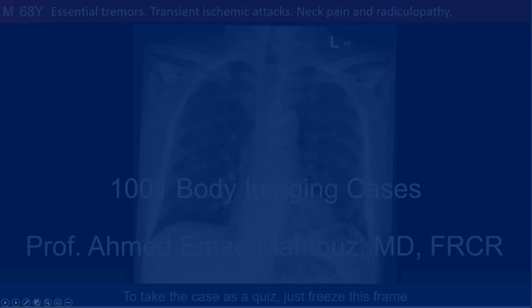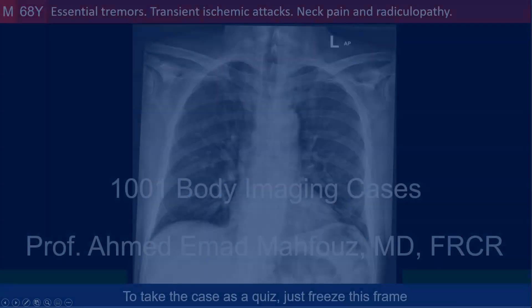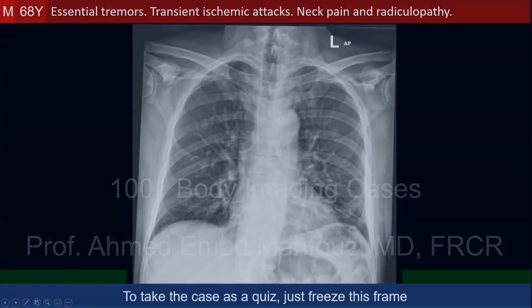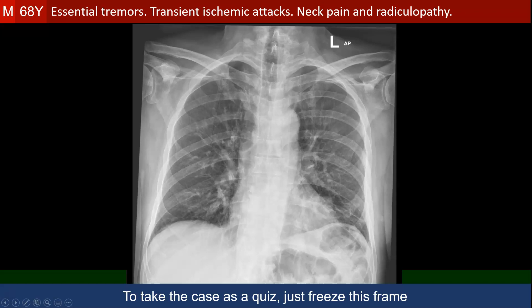Welcome to the Body Imaging Cases. This is a 68-year-old male with essential tremors, transient ischemic attacks, neck pain, and radiculopathy.